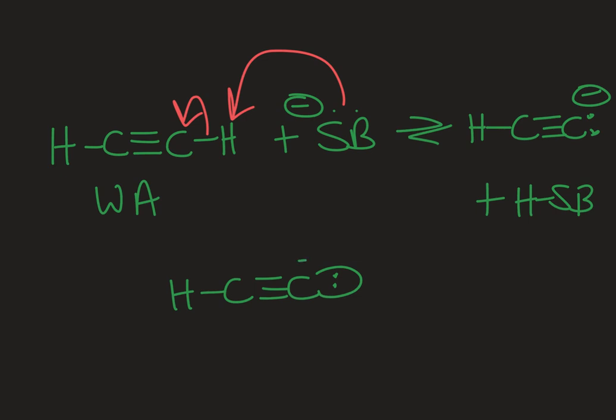So the electrons here are going to be in an sp hybridized orbital, and that sp hybridized orbital has half s character. s character is going to give it more of a spherical shape. So those electrons are going to be held closer to the nucleus of the carbon atom and therefore more stabilized.